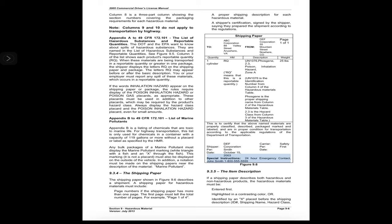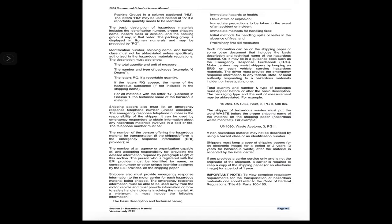The shipping paper also includes a 24-hour emergency contact: John Smith, 1-800-555-5555. Section 9.3.5: The Item Description. If a shipping paper describes both hazardous and non-hazardous products, the hazardous materials must be entered first, highlighted in a contrasting color, or identified by an X placed before the shipping description — ID, shipping name, hazard class, packing group — in a column captioned HM.